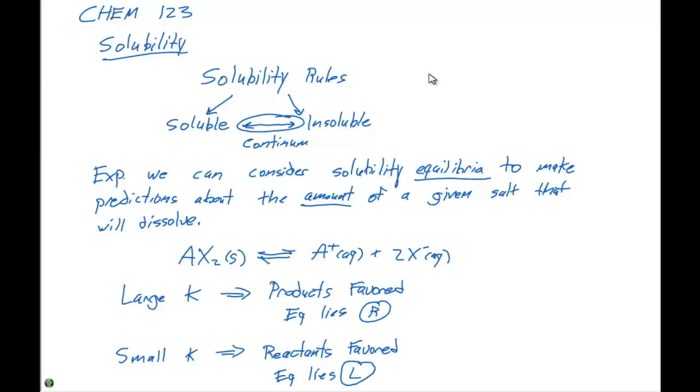If we have reactants favored and a very small K, that means we're gonna have more solid. So our particular salt is gonna be more insoluble or less soluble. So make sure you think about the magnitude of your equilibrium constant K when you're looking at these particular salts dissolving.